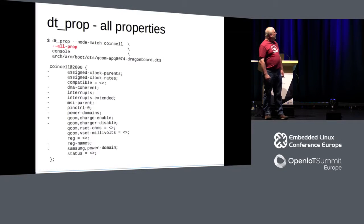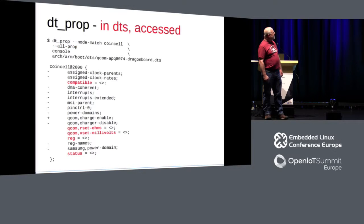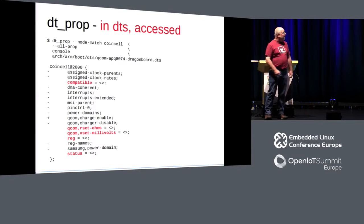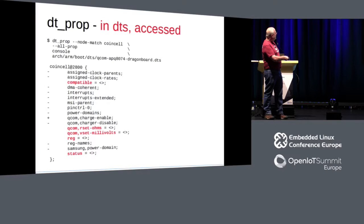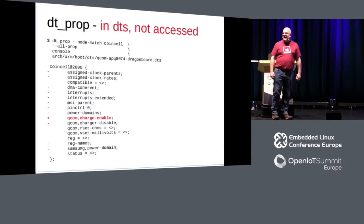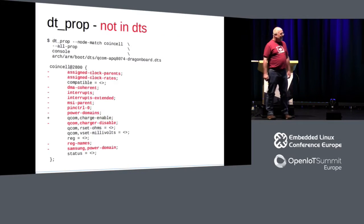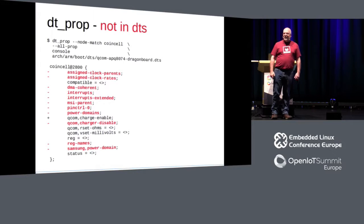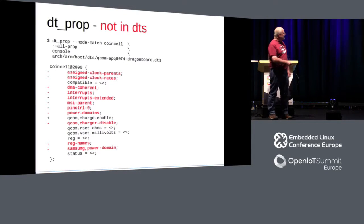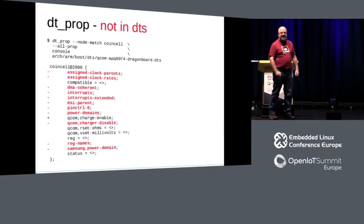DT_prop is a whole lot easier. If I just run it, it just jumps right out — all the minuses, pluses, and spaces. Those three categories: what was accessed — look for spaces in the first column, those five properties jump right out. What's in the device tree that didn't get accessed by the kernel — just look for the plus sign, jumps right out. What did the kernel try to access that was not in the device tree — just look for the minus sign. Really easy to scan for that.